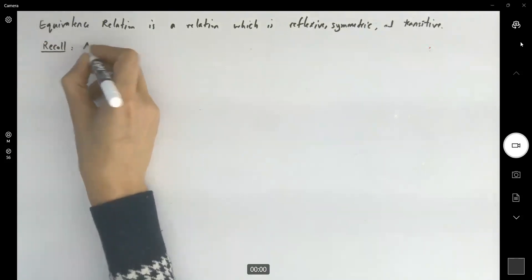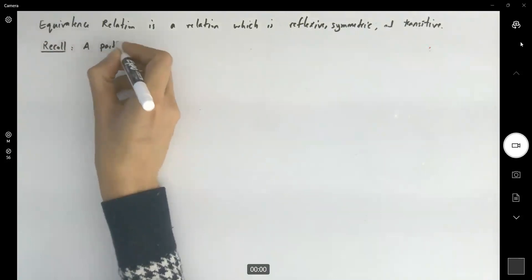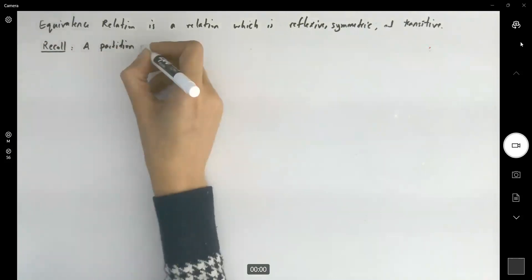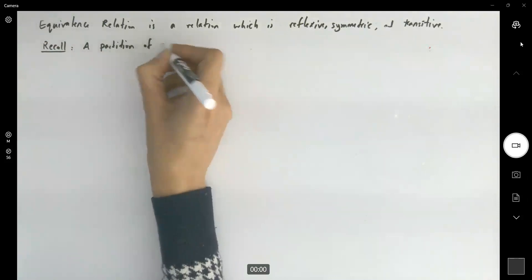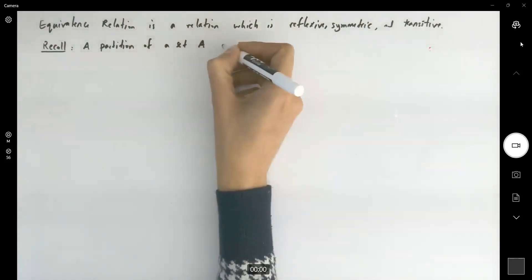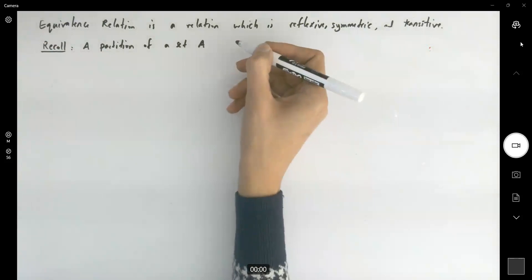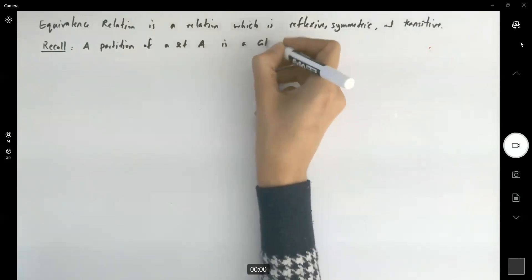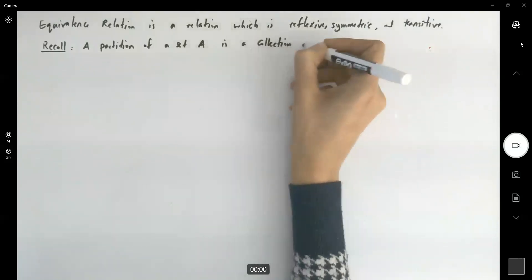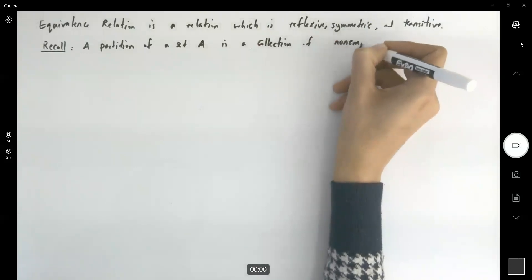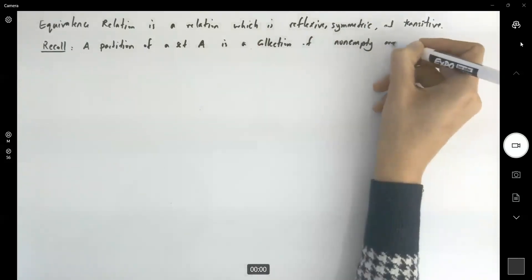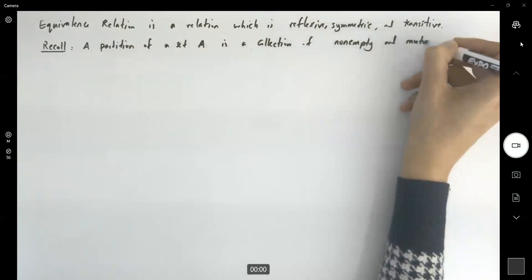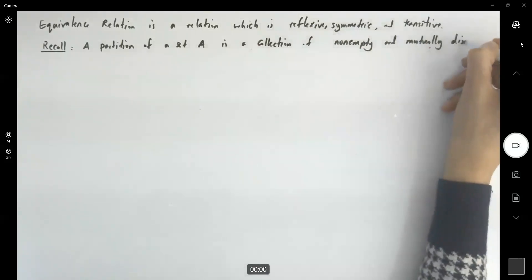A partition of a set like A is a collection of non-empty mutually disjoint subsets.